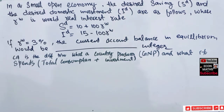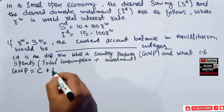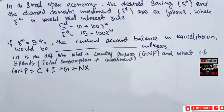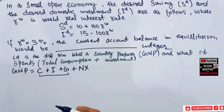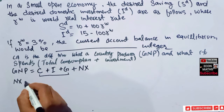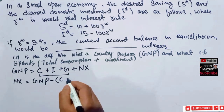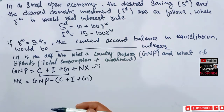This is one definition of the current account. Now we will derive the formula more formally. As we know, GNP of a country — gross national product — is equal to consumption expenditure plus investment expenditure plus government expenditure plus net exports. This is the national income identity. The part C plus I plus G denotes domestic spending, or absorption. We can rearrange this to get: NX, net exports, equals GNP minus (C plus I plus G).